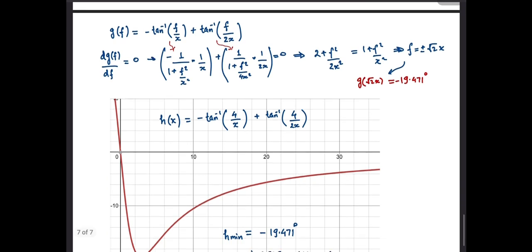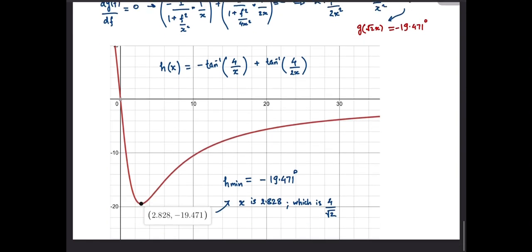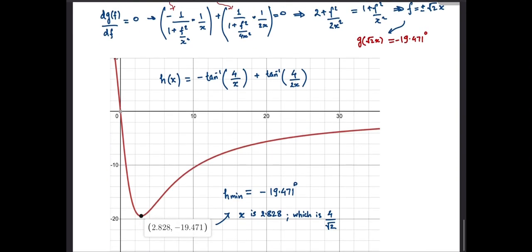We can differentiate this function with respect to f and find out the frequency at which we have the maximum phase shift. The more motivated folks among you can try that out and see that we have the max phase shift at f equal to root 2 times fp. Plugging that in, we get a max phase shift of about 19.5 degrees. I have attached a graph to verify this as well.